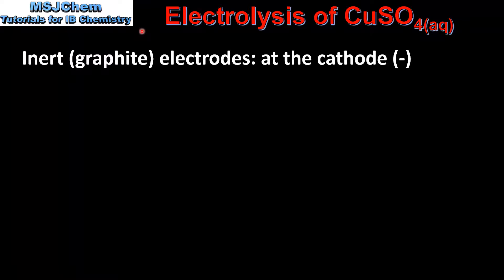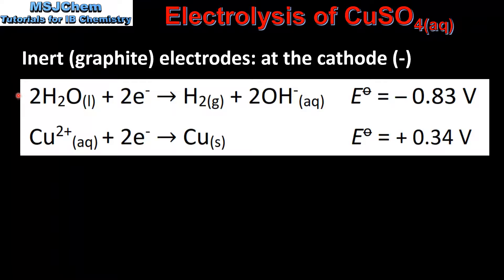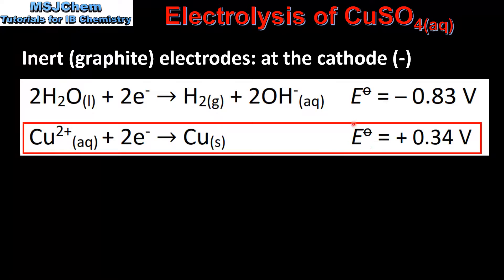Next we look at the electrolysis of copper sulfate solution using inert graphite electrodes. At the cathode there are two possible reactions: the reduction of water to form hydrogen gas, or the reduction of copper(II) ions to form copper metal. The reaction with a more positive electropotential will take place, therefore we'll have the reduction of copper(II) ions to form copper metal.